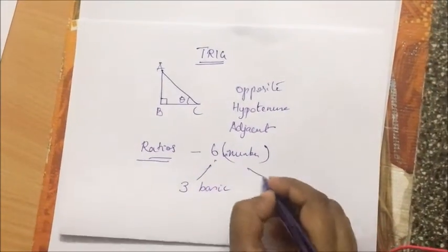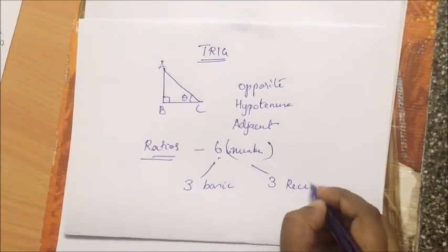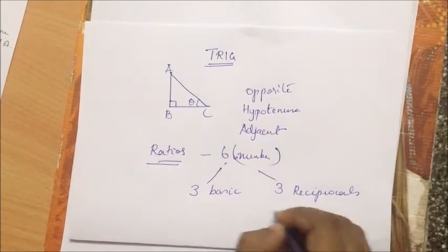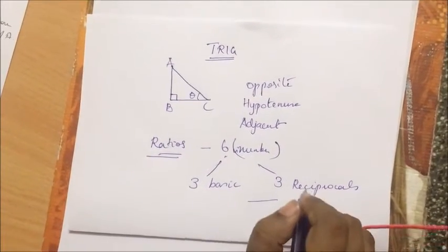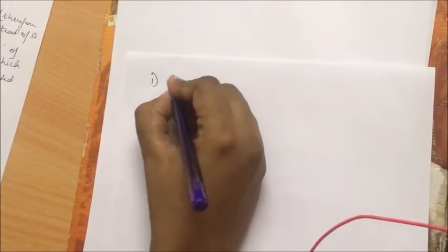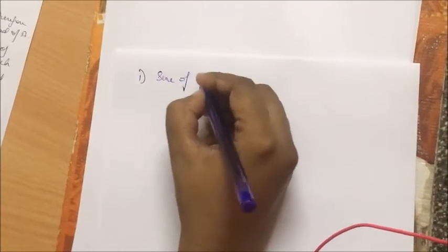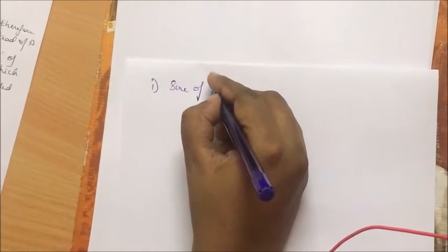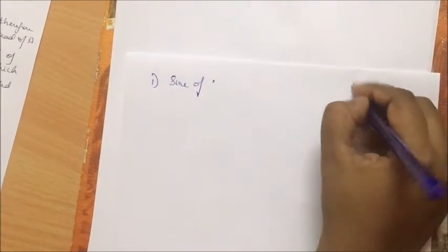Only three out of the six are very important or the basic ones, and the other three are reciprocals. So if we just remember the first three, then we are set for life. Let's quickly move on to what they are.